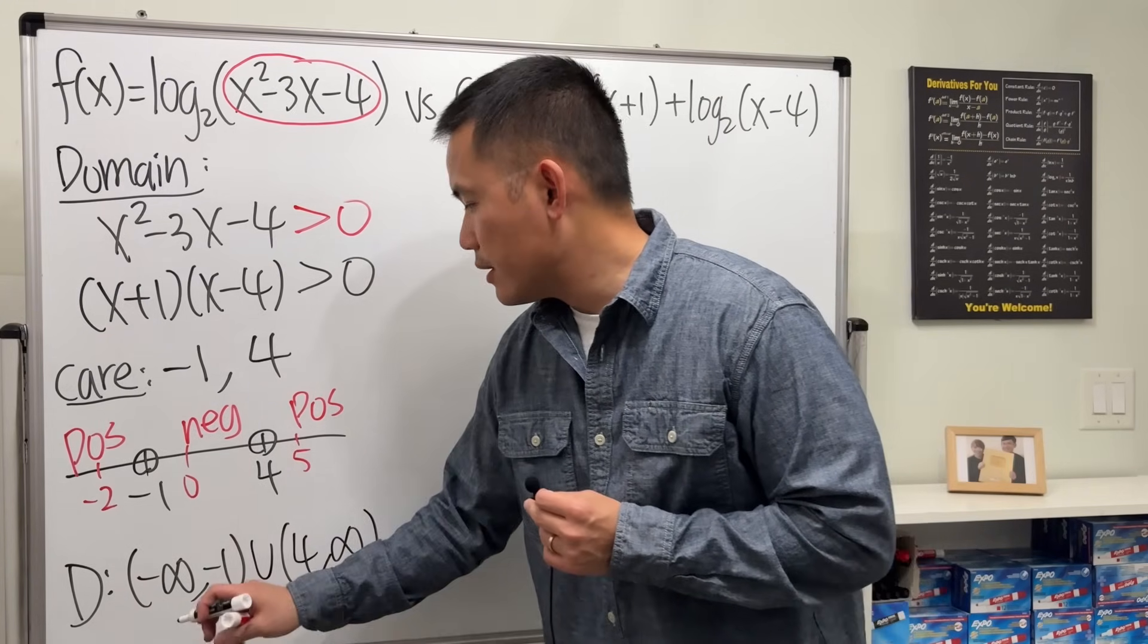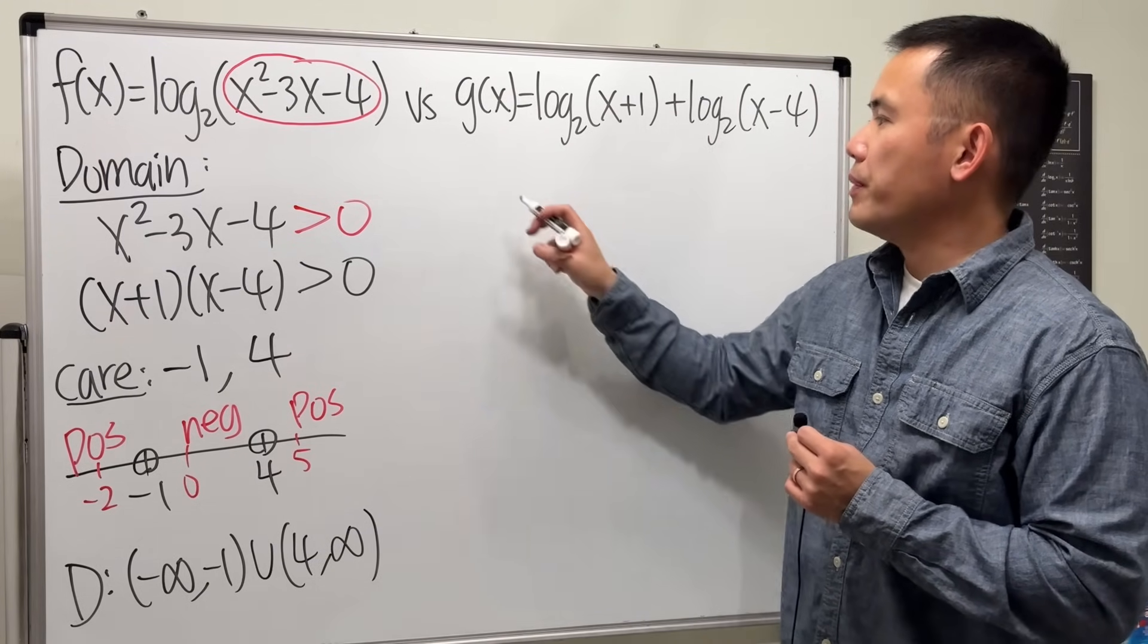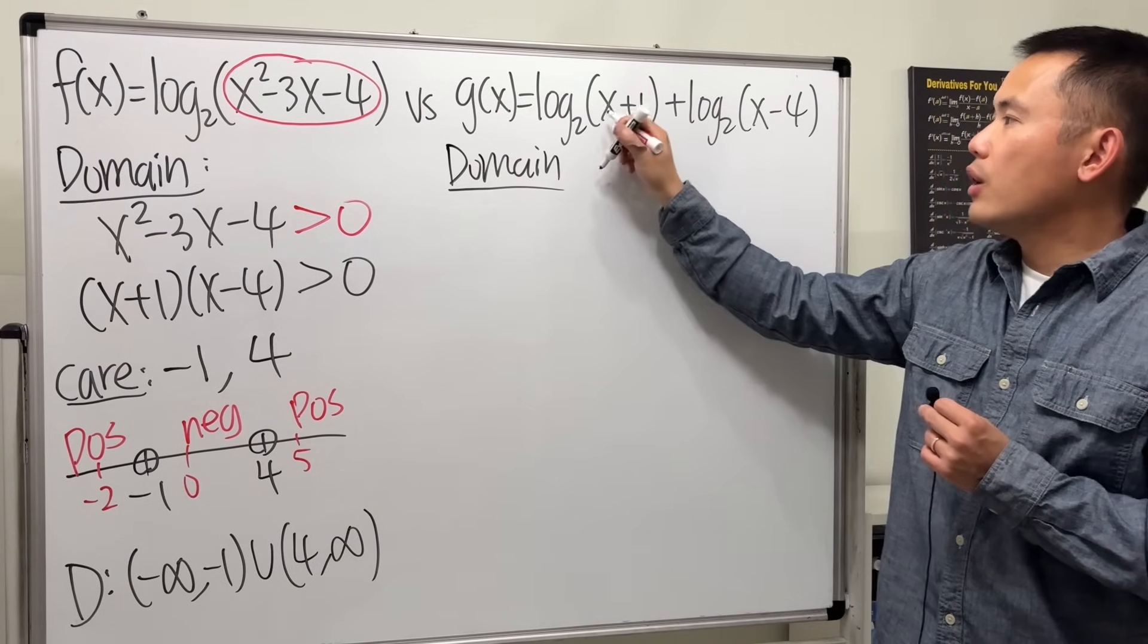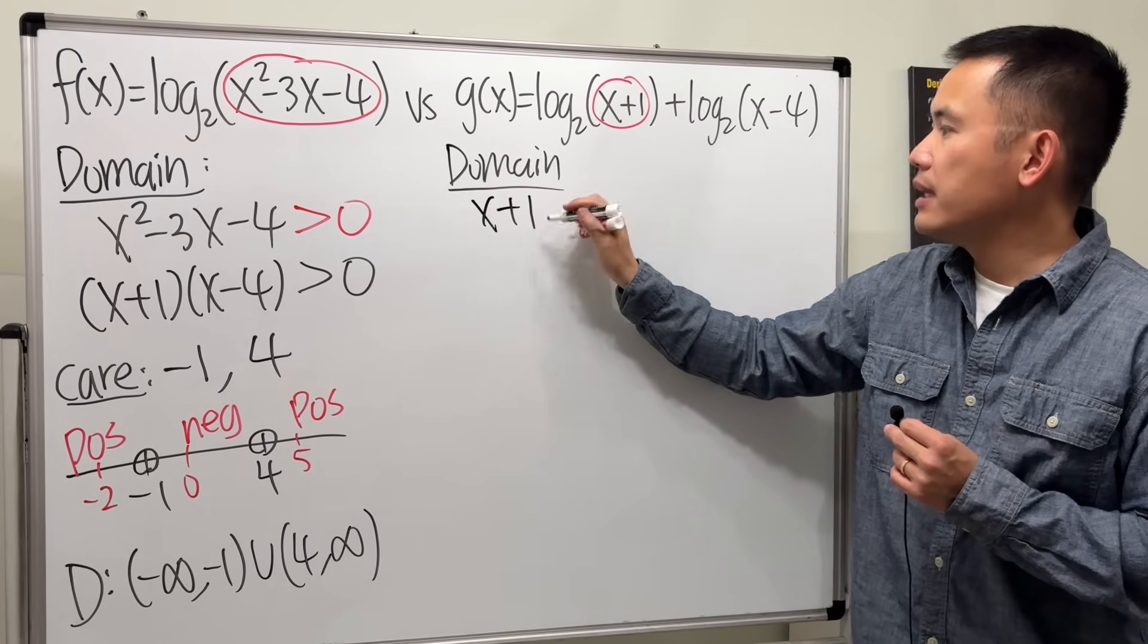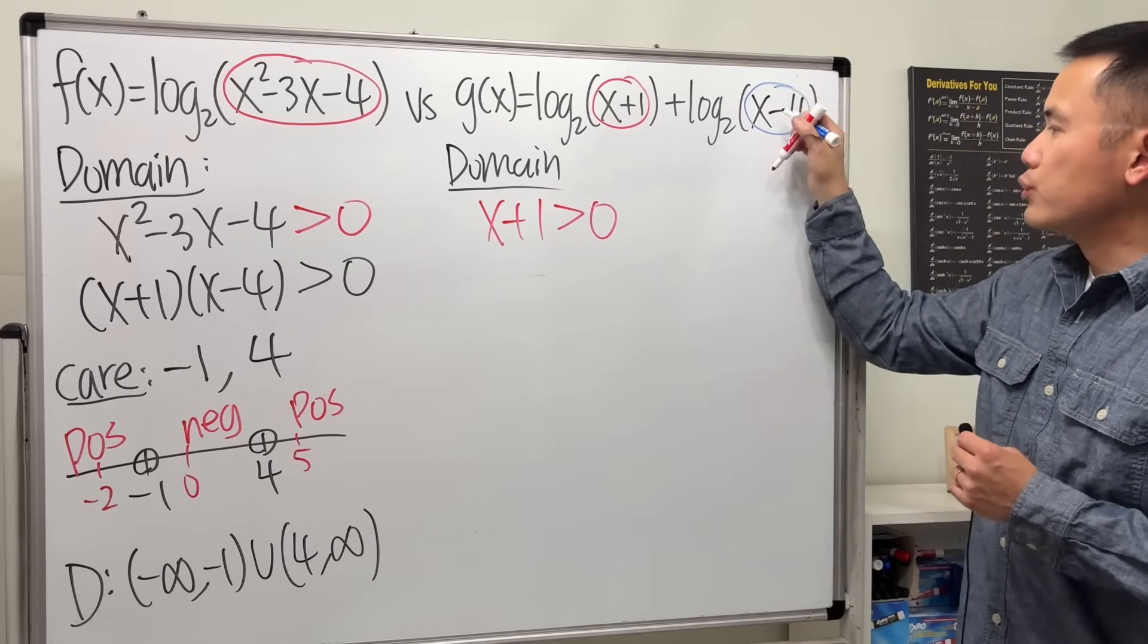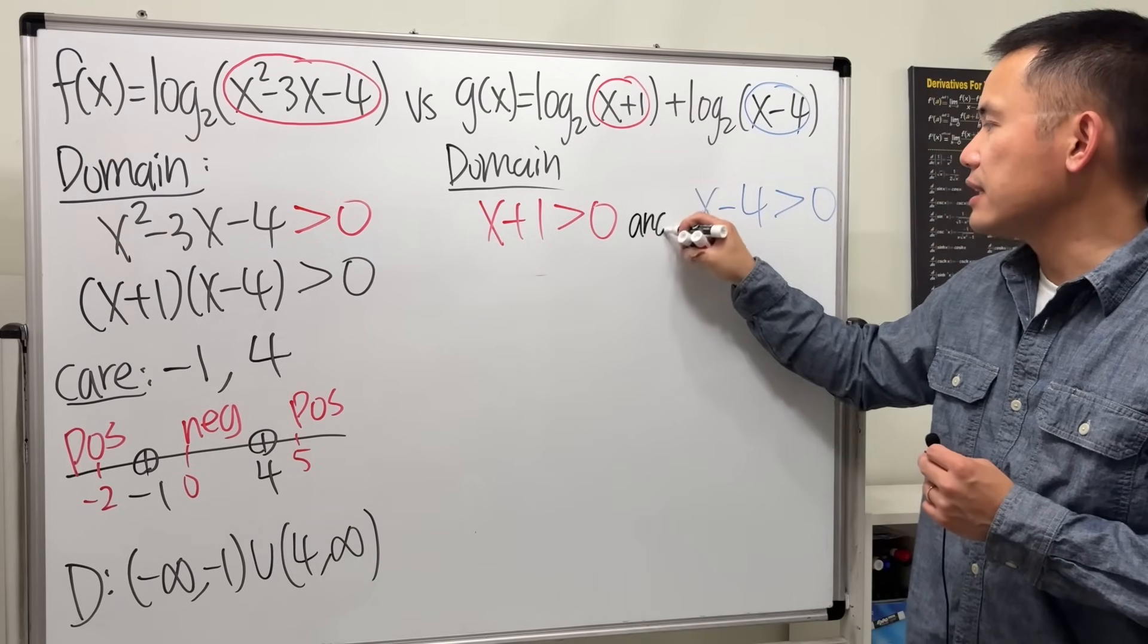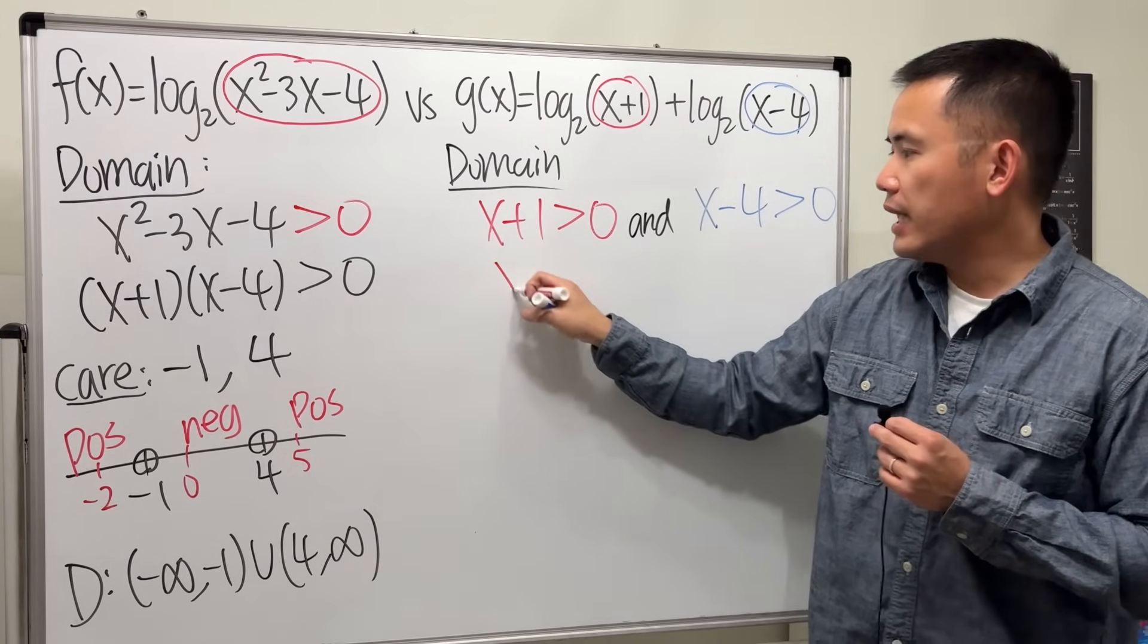That's the domain. Now let's take a look right here for its domain. Because g of x is written two separate log function like this, so I will have to look at this first one and set up x plus 1 is greater than 0, and we have another inside here, right? So we have to write x minus 4 is greater than zero. We must satisfy these two inequalities at the same time.